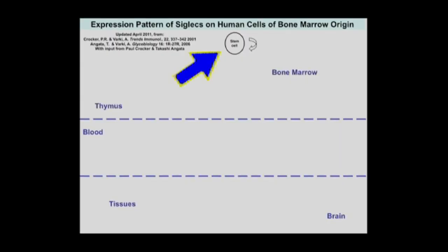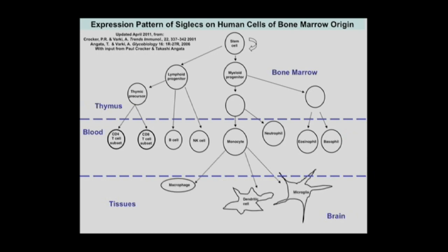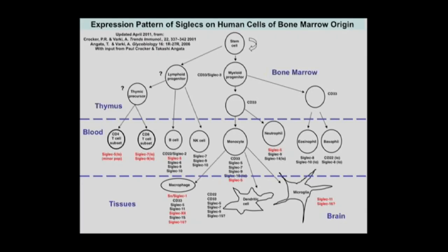Siglecs are found on many cell types, but often cells of bone marrow origin. The stem cell in the bone marrow develops into a variety of other cell types which eventually end up in your blood, and some differentiate and end up in various tissues including the brain and the immune system. If you look at the distribution of these siglecs among these cell types — this is a partially worked out system — we know that siglecs are expressed in various different places. Everywhere in red are human-specific changes from the great apes.